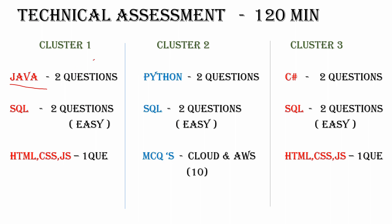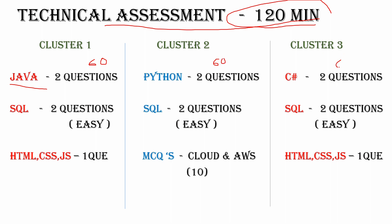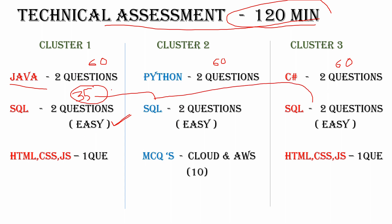Here you can see Java has two questions — 60 minutes. The total technical assessment duration is 120 minutes. Java: two questions, 60 minutes. Python: also 60 minutes. C#: also 60 minutes. Coming to SQL — SQL is very easy compared to Java and also HTML/CSS/JavaScript. SQL lines of code are very short compared to other codes. SQL has two questions with a duration of 35 minutes, and this applies for every cluster — Python cluster, Java cluster, C# cluster.